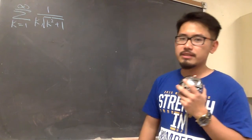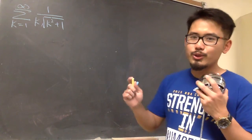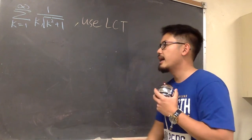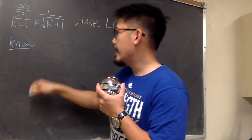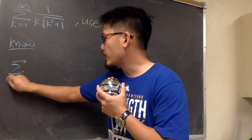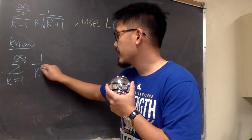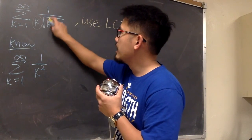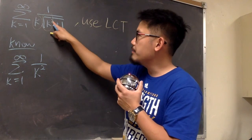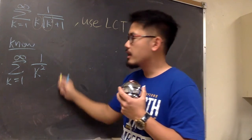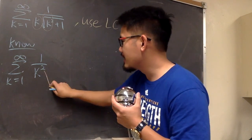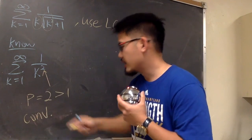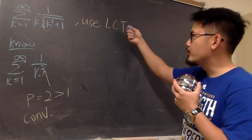Both the limit comparison test and the direct comparison test work here. Let me first show you with the limit comparison test. We put down what we know: sigma when k goes from 1 to infinity of 1 over k squared. The reason we get k squared is because the outer k times the square root of k squared — which equals k — gives us k squared in the denominator. This is a p-series with p equal to 2, which is greater than 1, so it converges.